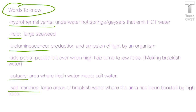Here are some words to know. Hydrothermal vents are underwater hot springs or geysers that emit hot water, found down in the deep zone. Kelp is just large seaweed. If something is bioluminescent, that means it produces and emits light — those creepy, crazy fish in the deep ocean that seem to glow are bioluminescent. Tide pools are puddles left over when high tides turn to low tides, creating brackish water. Estuaries are areas where fresh water meets salt water — that mixture is called brackish water. Salt marshes are large areas of brackish water where the ocean has flooded land due to high tides.